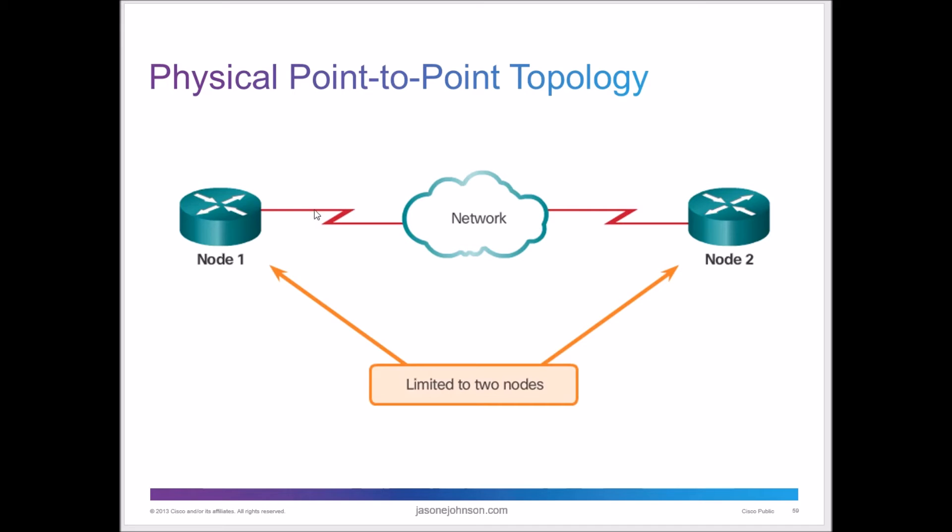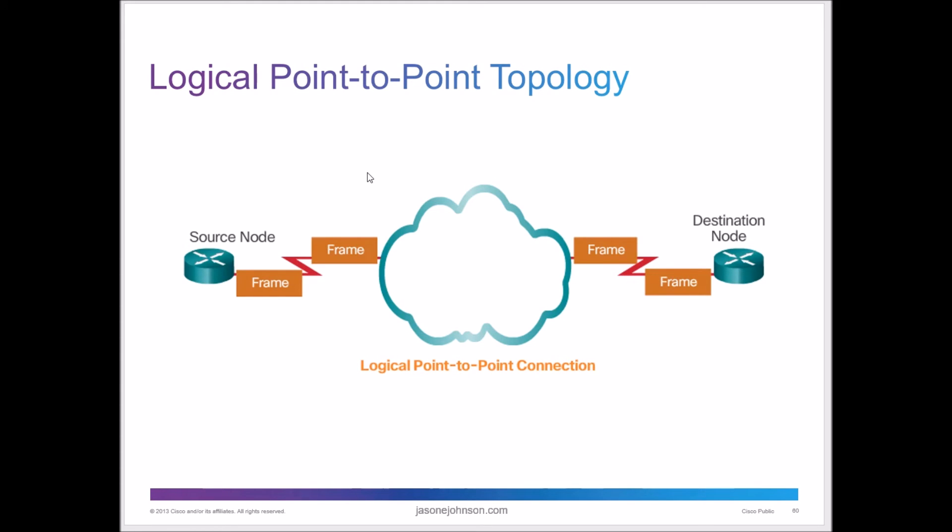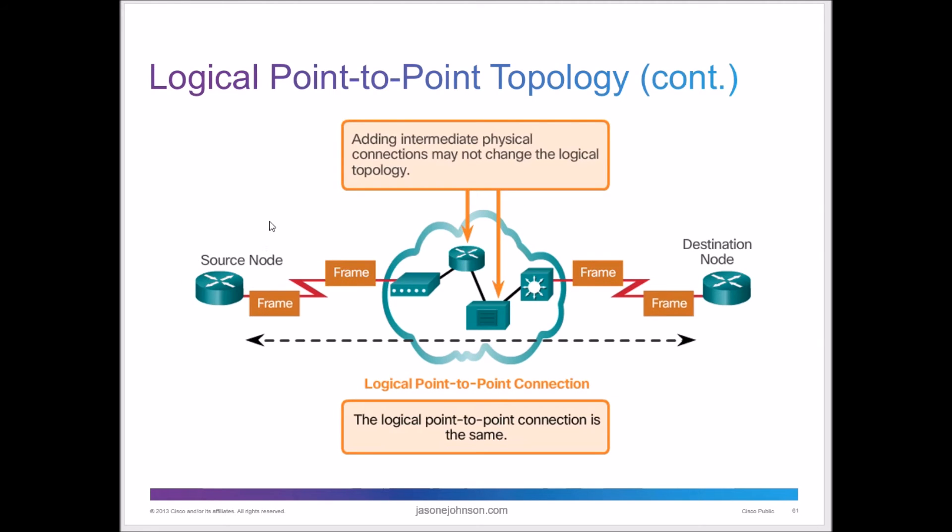Now, with physical point-to-point topology, we have two devices connected through some type of medium, whether it's through a cloud, but it's limited to two nodes. When we're doing point-to-point, we connect those two together and they talk to each other. On local point-to-point connection, we connect those two and those frames just go through. This is another expanded view of that.